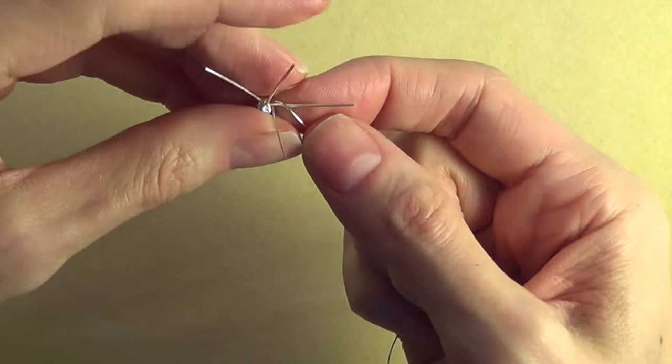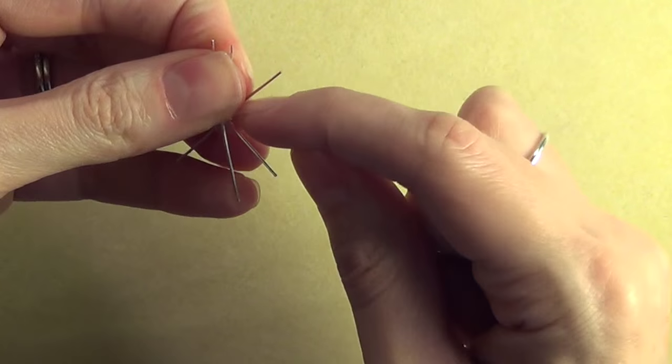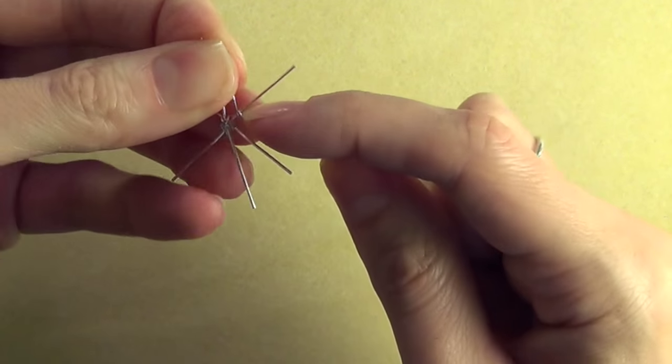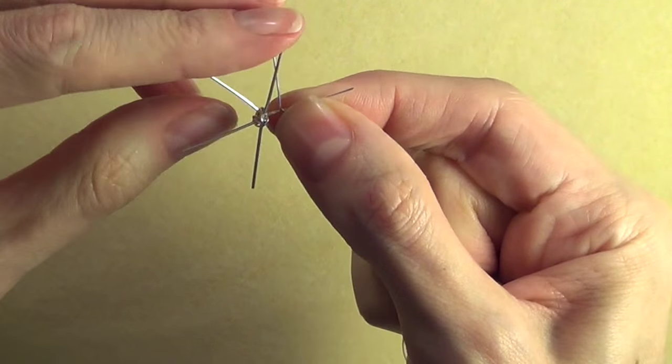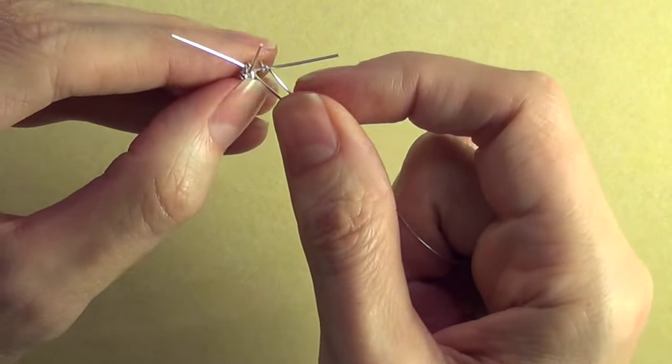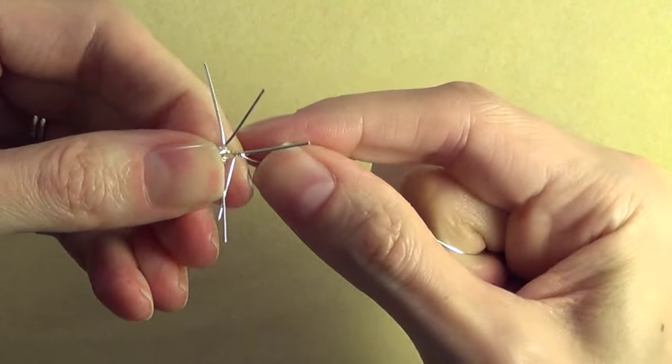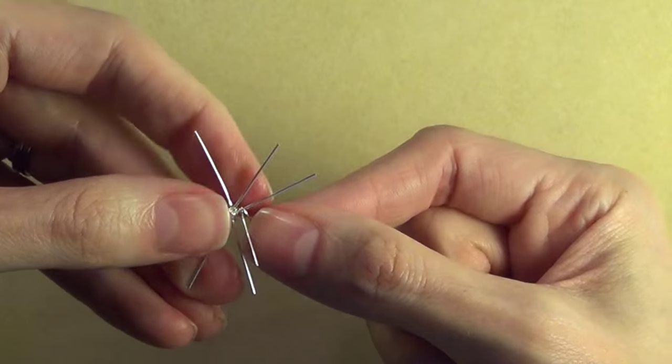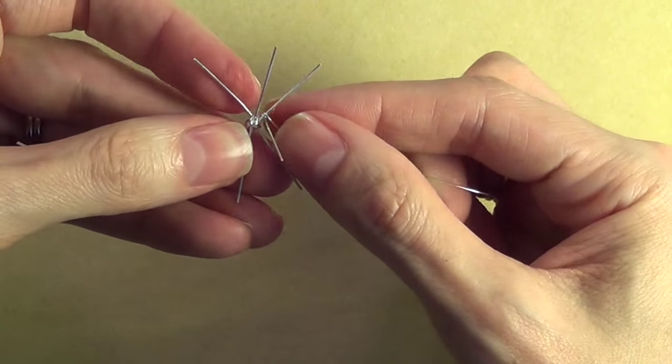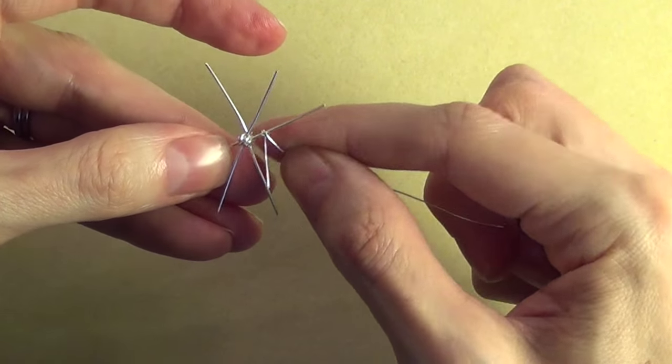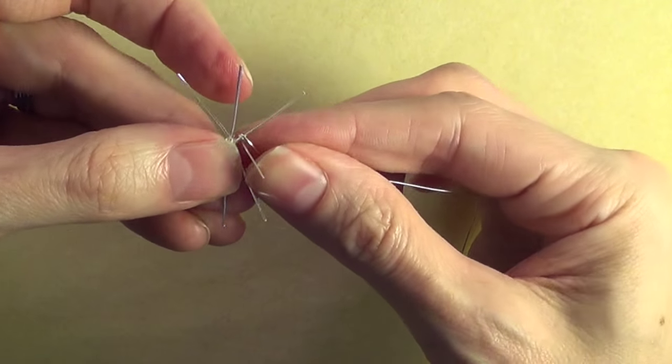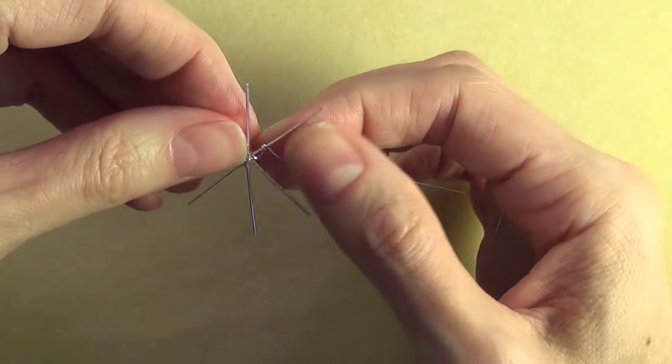So I'm just going to wrap the end of the wire around one of the spokes to try and secure that down. Get that as tight as I can. As you can see that still slides around a little bit so I'm going to take this the short end of the wire here and wrap it around the next spoke over.